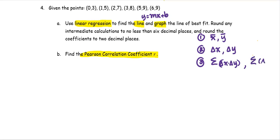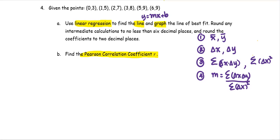We also calculate the summation of delta x squared. In the last step, we calculate the slope m and the intercept b. The slope m uses the summation of delta x times delta y divided by the summation of delta x squared from step 3. The intercept b is calculated using ȳ from step 1 minus m times x̄. So we need to compute x̄, ȳ, delta x, delta y, the product of delta x times delta y, and delta x squared.